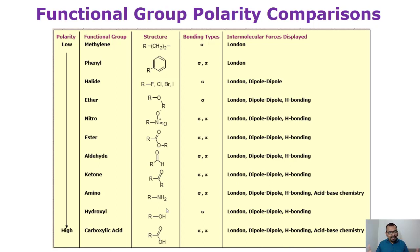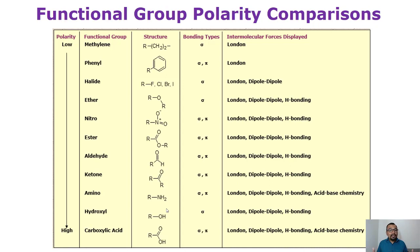The hydroxyl group (R–OH): the R brings London dispersion forces, and oxygen, being a highly electronegative atom, brings dipole-dipole interaction. It also forms hydrogen bonds with another compound having a hydrogen atom. And lastly, carboxylic acid: London dispersion forces because of the alkane chain, dipole-dipole because of the oxygen atoms present inside the carboxylic functional group, hydrogen bonding, and acid-base chemistry. These are the primary reasons why your compound can get retained onto the stationary phase.